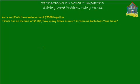Welcome to homecampus.com.sg. Let's solve another word problem on whole numbers. The word problem given is: Yana and Zach have an income of $7,500 together. If Zach has an income of $1,500, then how many times as much income as Zach does Yana have?